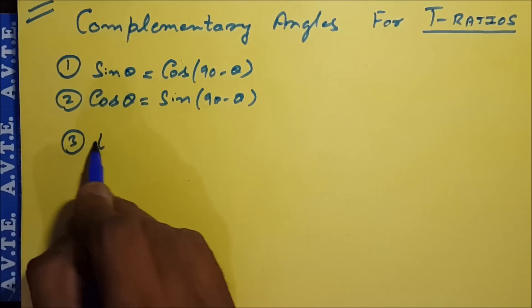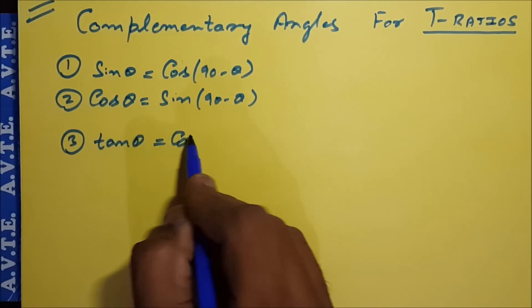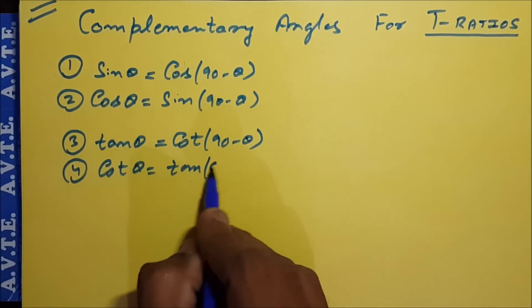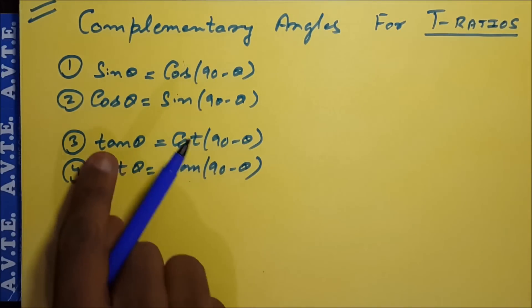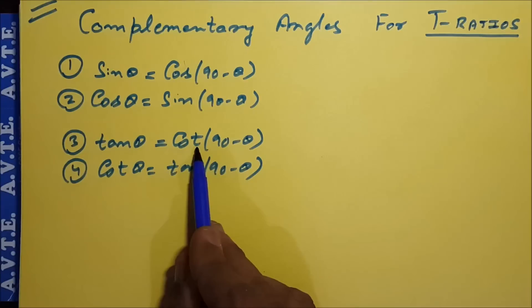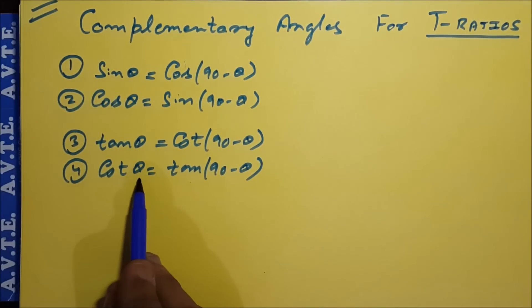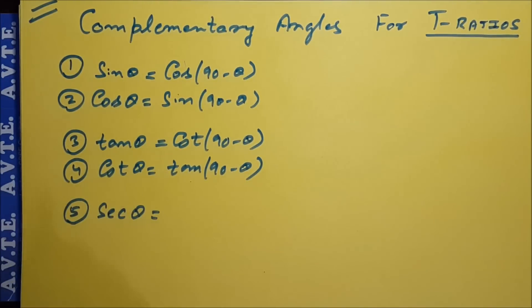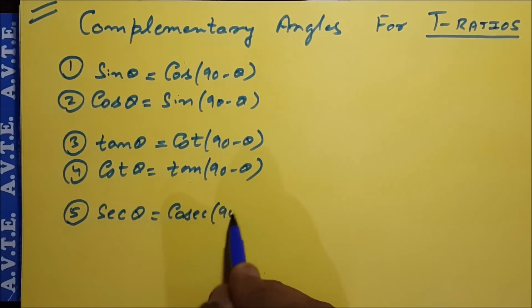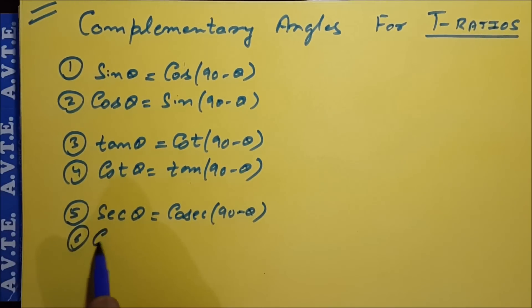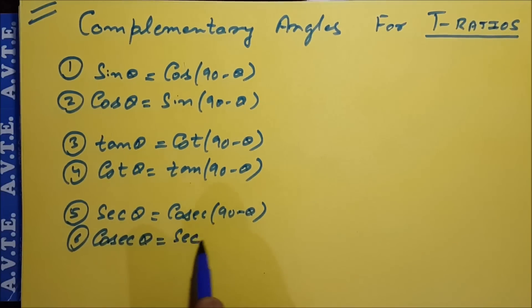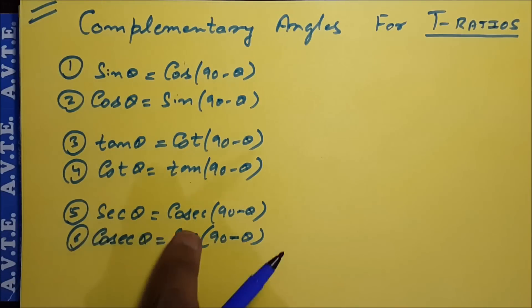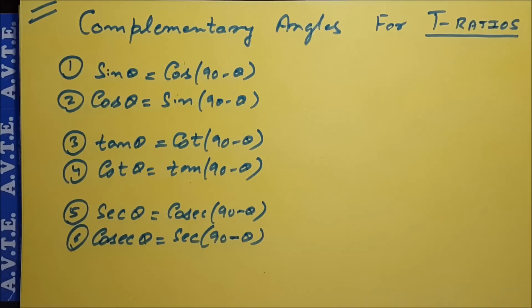The third formula is tan theta is cot(90 minus theta) and cot theta is tan(90 minus theta). The fifth formula is sec theta is cosec(90 minus theta) and cosec theta is sec(90 minus theta).